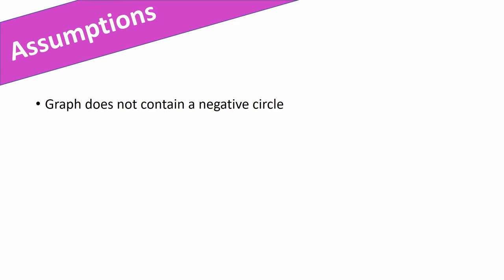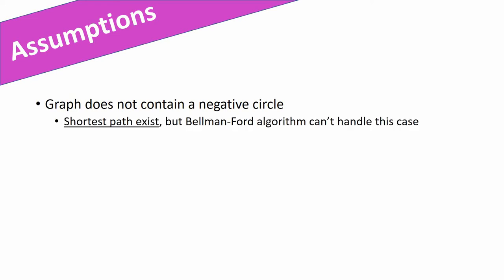Before we start with the actual algorithm we need to make two assumptions. First of all, we need to assume that the graph does not contain a negative circle. In the literature you may find that we have to assume this because otherwise the shortest path does not exist — but that statement is actually wrong. A shortest path always exists because the shortest path has at most n-1 vertices. The reason we assume no negative circle is simply because the Bellman-Ford algorithm is not designed to handle negative circles.